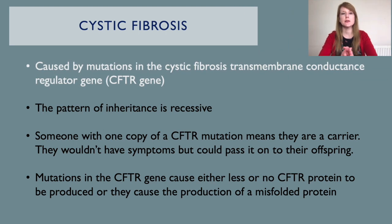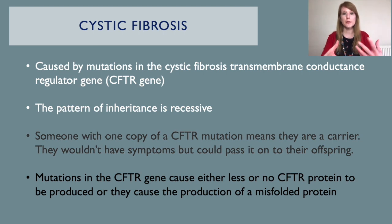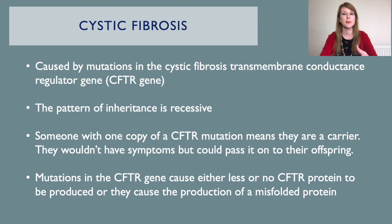We're now going to look at cystic fibrosis as an example of how a mutation can cause a genetic disease. Cystic fibrosis is caused by mutations in the cystic fibrosis transmembrane conductance regulator gene, or the CFTR gene. Everyone has two copies of this gene, one from the mother and one from the father. The pattern of inheritance is recessive, meaning that both copies of the CFTR gene would need to have a mutation for someone to exhibit cystic fibrosis. If someone has just one copy of a mutation in this gene, they are known as a carrier. In someone with cystic fibrosis, the mutations cause either no CFTR protein to be made, or a truncated or incorrectly folded CFTR protein that cannot function properly. Depending on the mutation and how severely it impacts the protein will determine how severe the symptoms are.